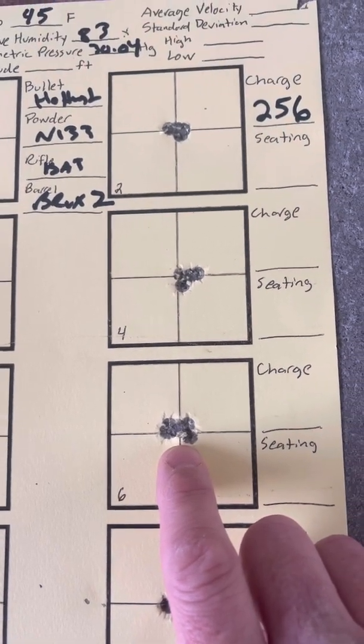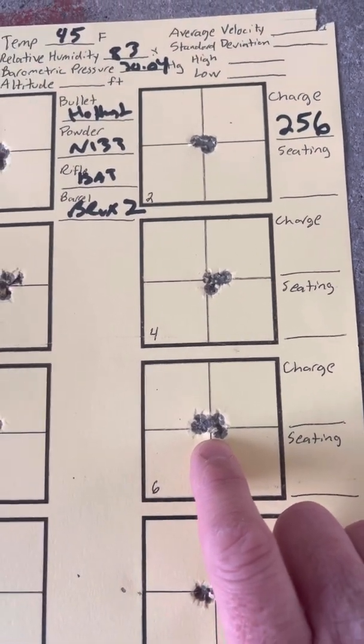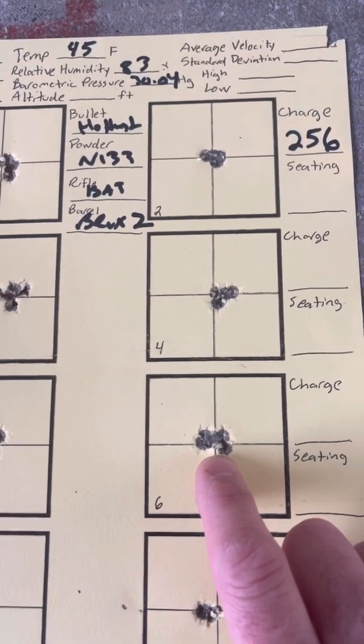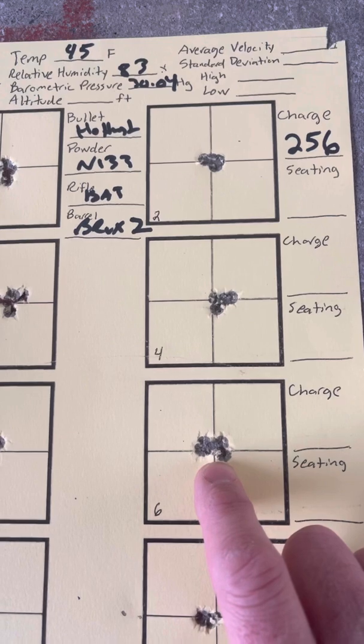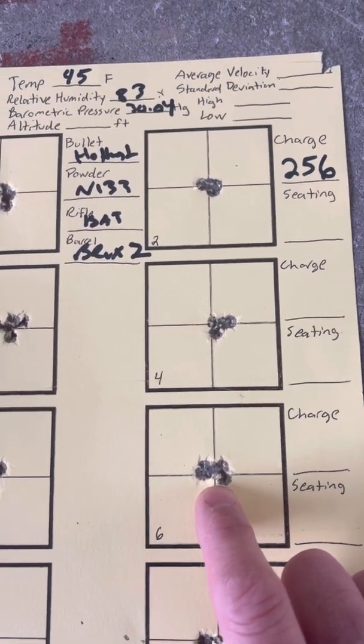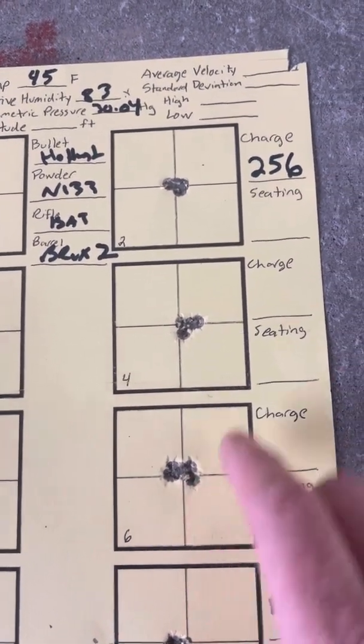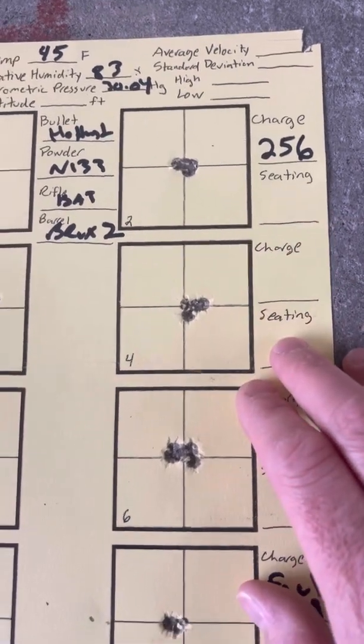It's pretty clear .256 is the winner. It's pretty well understood that with N-133, you want to have a lot of neck tension, or you want a narrower neck diameter, basically. This test seems to substantiate that idea.